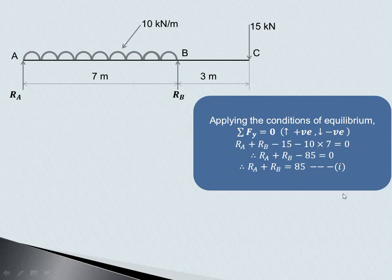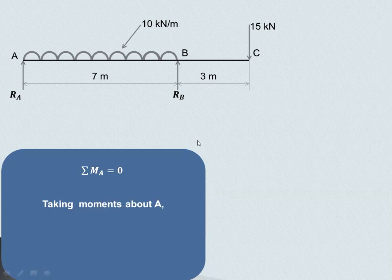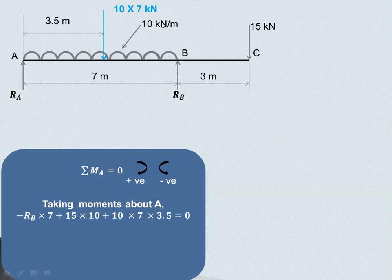Now we apply the second condition of equilibrium: summation of moments equals zero, taking moments about point A. Clockwise moments are positive and anticlockwise moments are negative. Since reaction RA passes through point A, it produces no moment. RB produces an anticlockwise moment; the perpendicular distance from B to A is 7 meters, so RB multiplied by 7 is taken as negative.